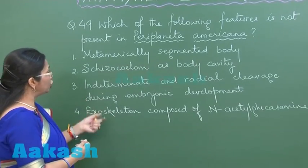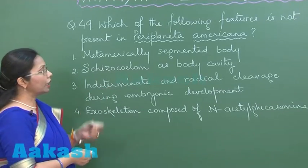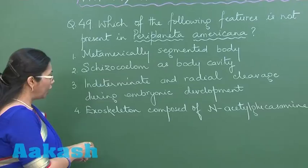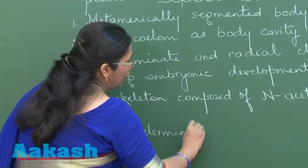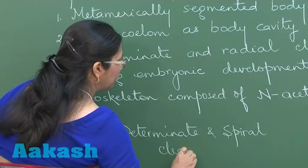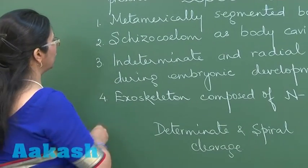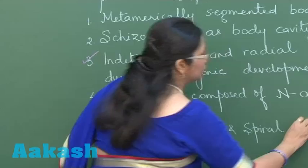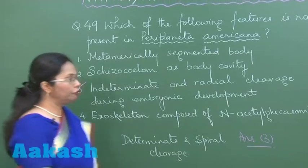The third choice — indeterminate and radial cleavage during embryonic development — this occurs in case of deuterostomic animals, while arthropods are protostomic. In protostomes, the type of cleavage is determinate and spiral. So this is not applicable to Periplaneta, and that would be our answer: option number three. Let's move on to the next question, number fifty.